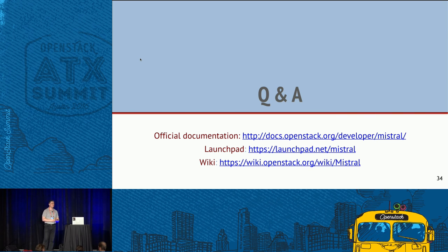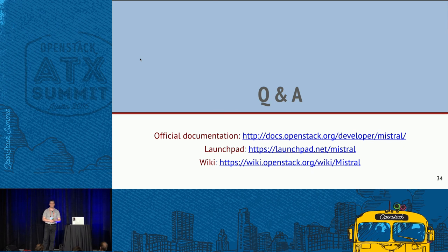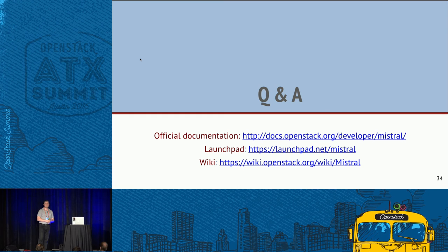Q: It looks a lot like Ansible to me. Can you use Mistral without OpenStack? A: Yes. The only integration point is Keystone and it's optional. If you don't need to authenticate with Keystone, you can use Mistral without OpenStack at all. In that case you won't be able to use the built-in actions for accessing OpenStack services.